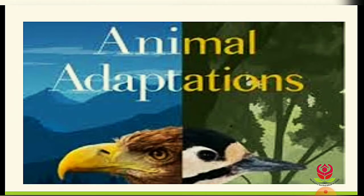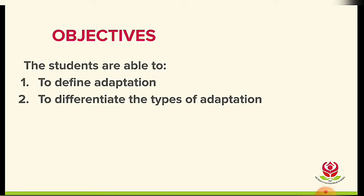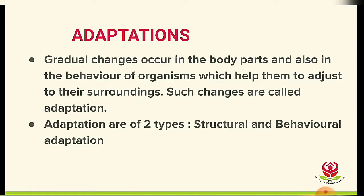These tiger stripes and long neck are basically adaptations of animals. Today we are going to study about animal adaptations. My objective is for students to be able to define adaptation and differentiate the types of adaptation. Adaptation is a gradual change that occurs in the body parts and behavior of an organism, which helps them adjust to their surroundings. Adaptations are of two types: structural and behavioral.